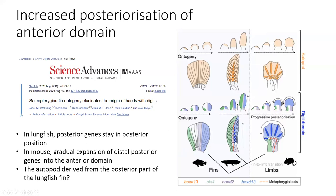We can't yet confirm whether bone elements in the lungfish fin are homologous to the digits of a mouse limb — we need more experiments. Sadly it's really hard to get hold of these embryos now since the breeding colony was shut down about 10 years ago.